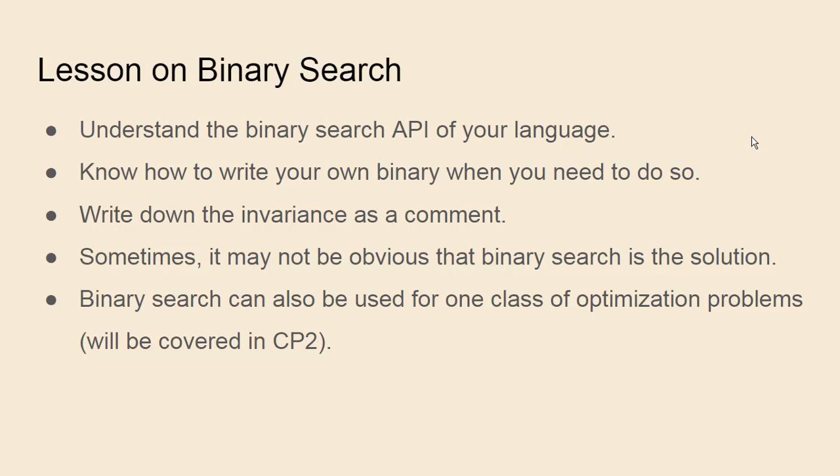even though coming up with the optimal solution is hard. You can use binary search to find what is the best achievable objective. That's sometimes known as bisection. This is a very powerful technique that we will cover in CP2.